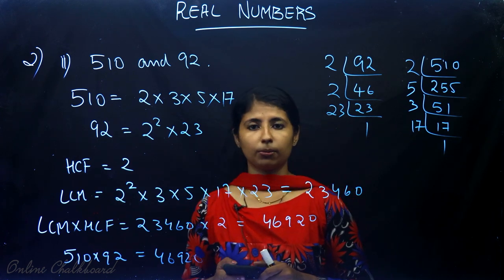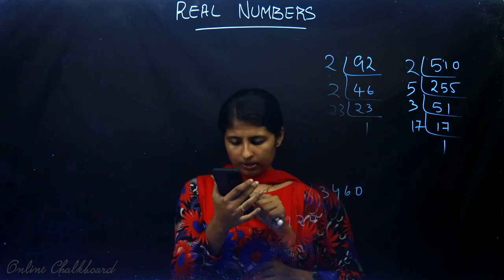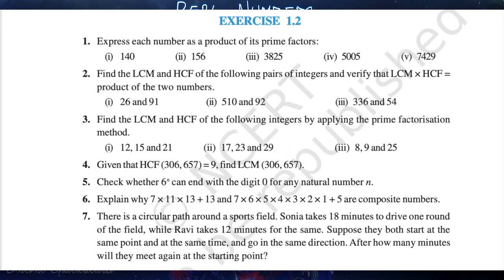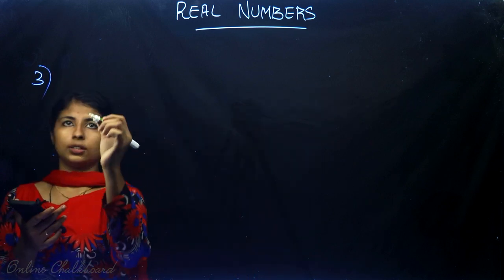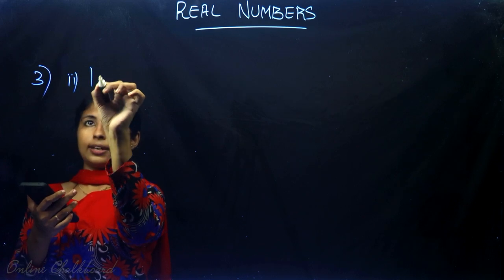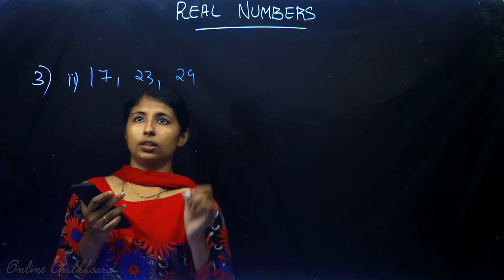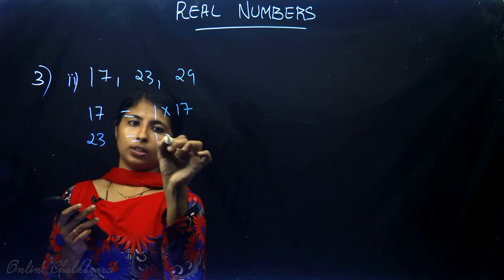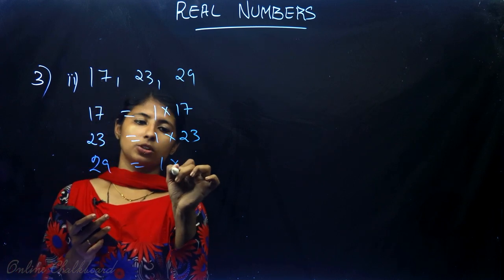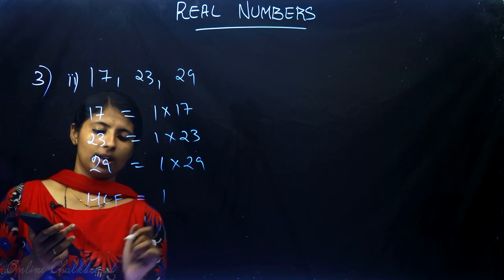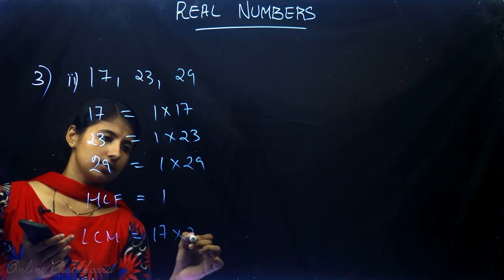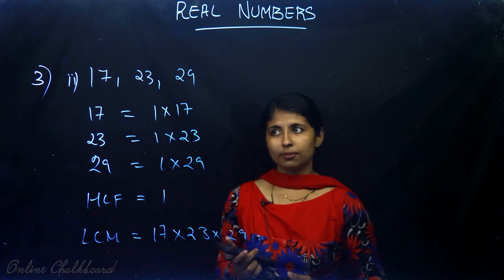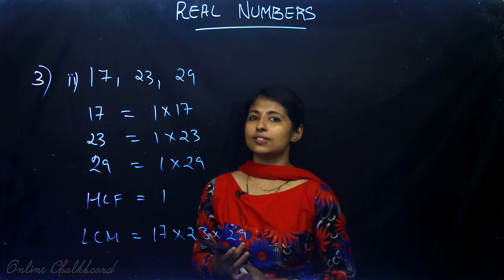Question number 3: Find the LCM and HCF of the following integers by applying the prime factorization method. For the sub-part with 17, 23, and 29: all three are prime numbers, so their prime factorizations are 1 × 17, 1 × 23, and 1 × 29. Therefore, HCF = 1 and LCM = 17 × 23 × 29. This is the case when all three numbers are prime.